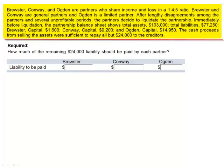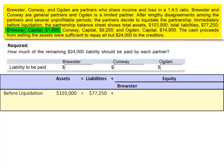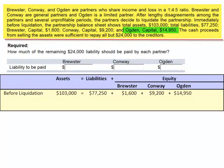After lengthy disagreements among the partners and several unprofitable periods, the partners decide to liquidate the partnership. Immediately before liquidation, the partnership balance sheet shows total assets $103,000, total liabilities $77,250, Brewster's capital balance $1,600, Conway's capital balance $9,200, and Ogden's capital balance $14,950.